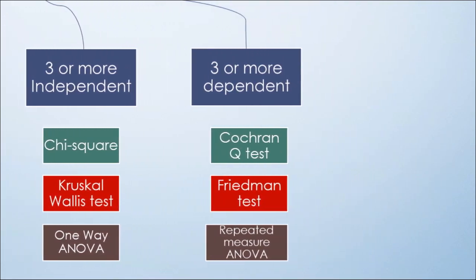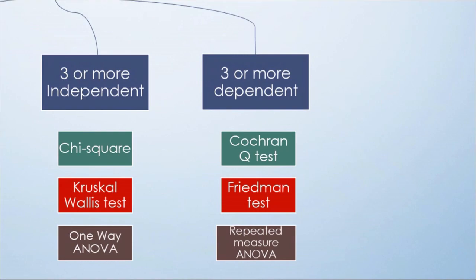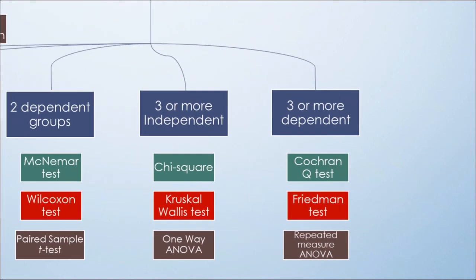Finally, with three or more dependent groups, we use Cochrane Q test for categorical data, Friedman test for non-parametric, and repeated measure ANOVA test for parametric data.